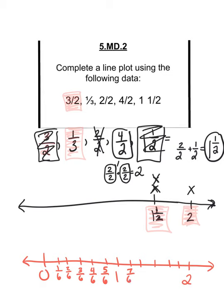So 1 and 1/6, 1 and 2/6, 1 and 3/6, 1 and 4/6, 1 and 5/6, and 2. Okay, so 1 x goes above 2. I did that.